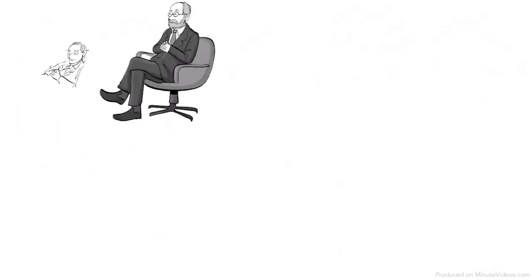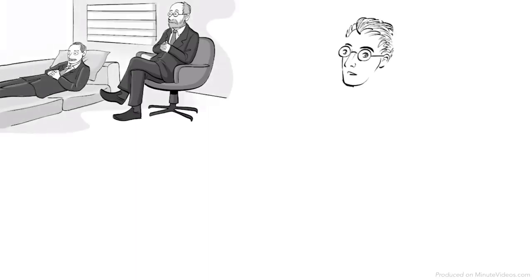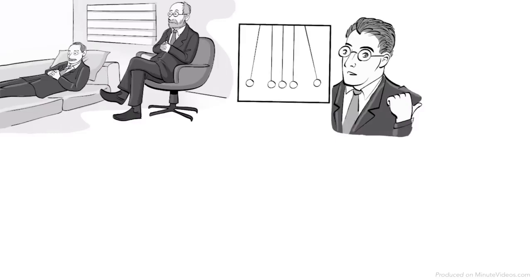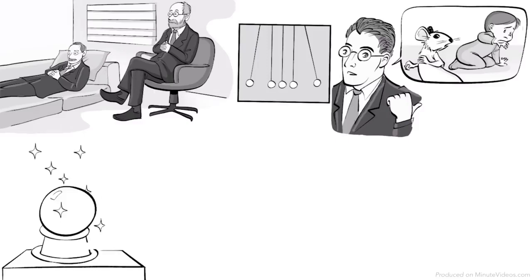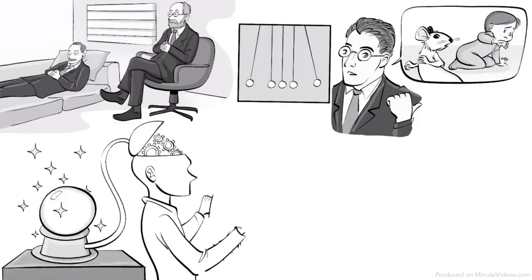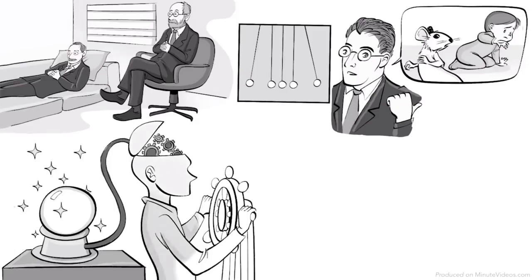Unlike Freud and Jung, he was not interested in thoughts or the mind, because in his opinion, the analysis of actions and reactions was the only way to apply the scientific method to psychology and get objective insight into human behavior. He thought of psychology as an objective branch of natural science. Its goal: the prediction and control of behavior.